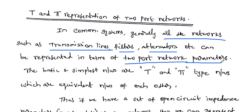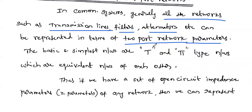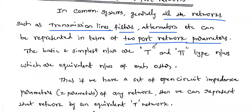In terms of two-port network parameters, in order to analyze all our communication system blocks like transmission lines, communication filters, and attenuators — each network is considered as a two-port network. In order to analyze and design that particular network, we use two-port network parameters like Z-parameter, transmission line parameter, H-parameter, and so on.